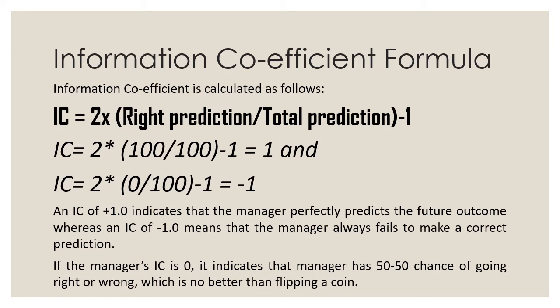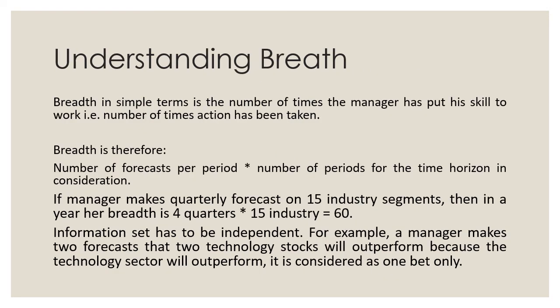We can be on two extremes of the Information Coefficient: it could be positive 1 or negative 1. If the IC is +1, it indicates the manager perfectly predicts the future outcome. If it is −1, the manager fails to make correct predictions. If it is 0, it indicates the manager has a 50/50 chance of being right or wrong — no better than flipping a coin. Using the IC, we are basically evaluating the ability of a manager to predict things correctly.